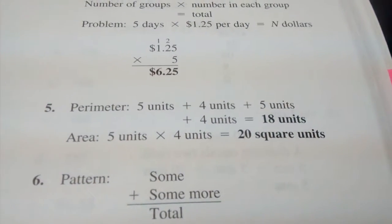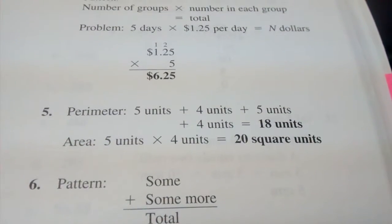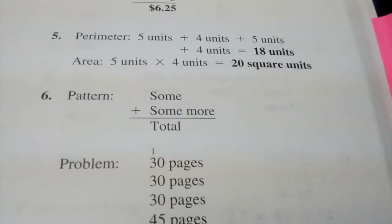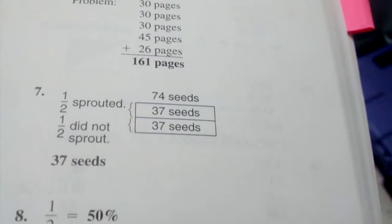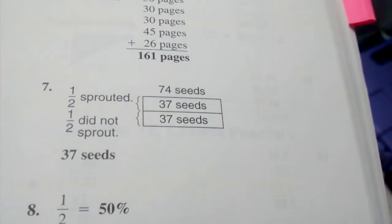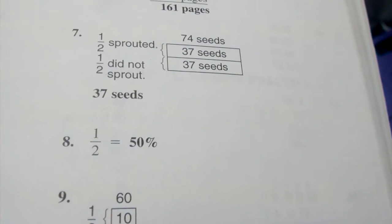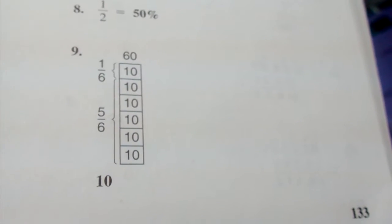Number 5, 18 units and 20 square units. Number 6, 161 pages. Number 7, 37 seeds. Number 8, 50 percent. Number 9, 10.